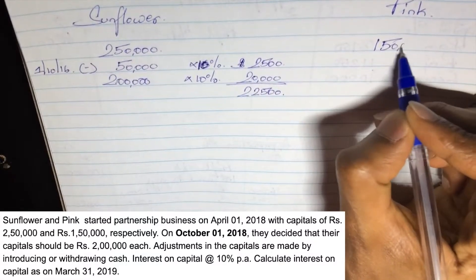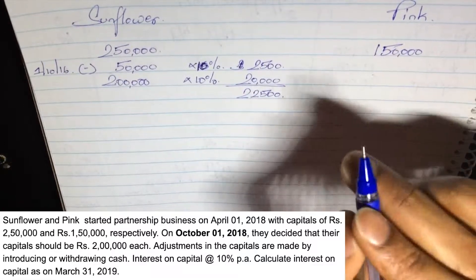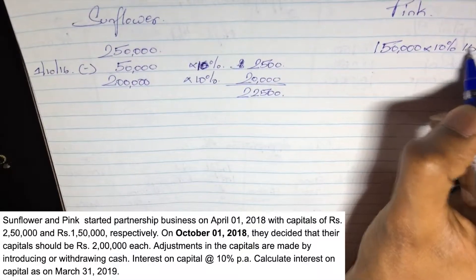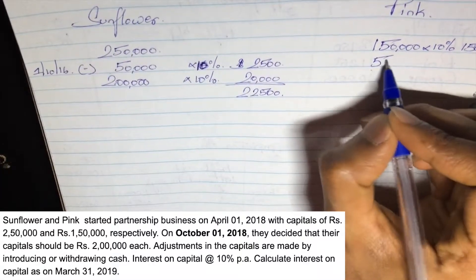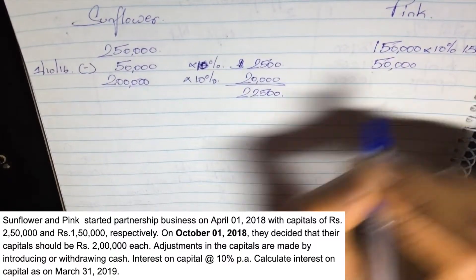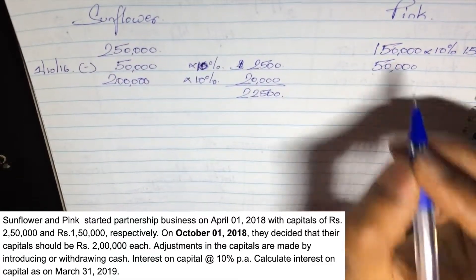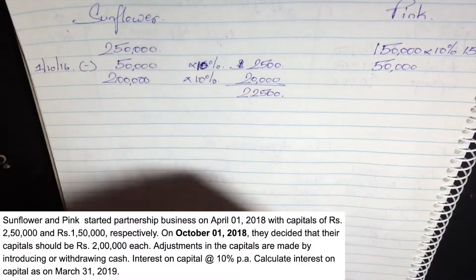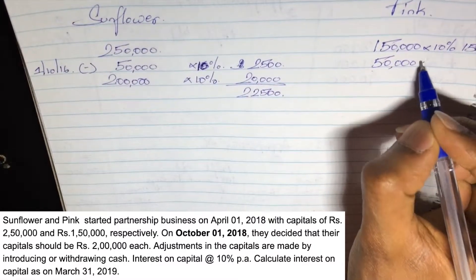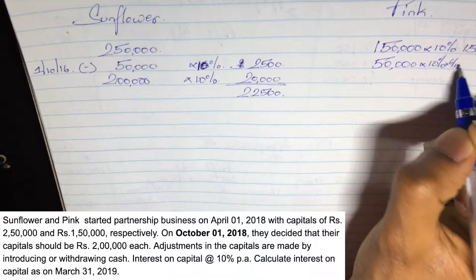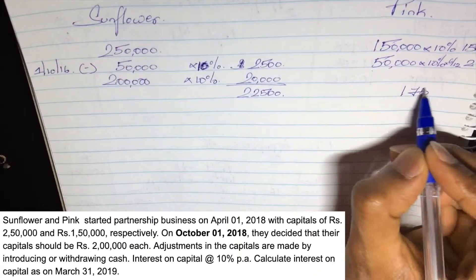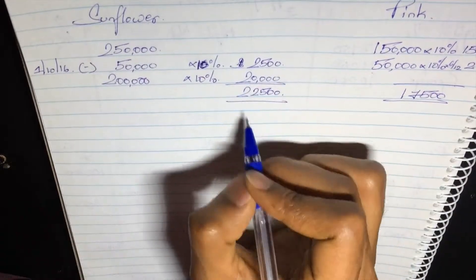For Pink Rose: she had 1,50,000 for the full year as the opening capital, then brought in 50,000 from October onwards. So 1,50,000 at 10% for the full year gives 15,000, and 50,000 at 10% for 6 months (October to March) = 2,500. Total interest for Pink Rose is 17,500. So Pink Rose gets 17,500 and Sunflower gets 22,500.